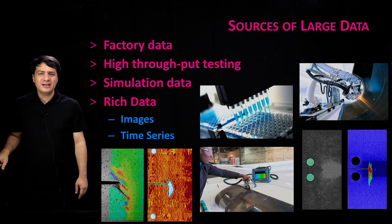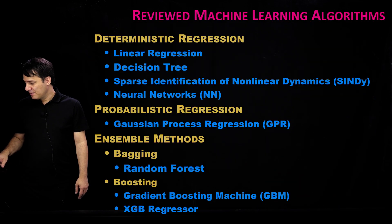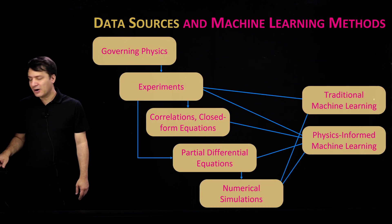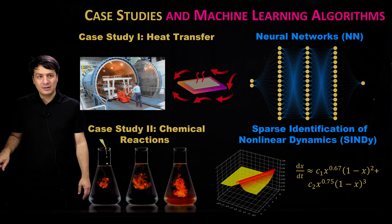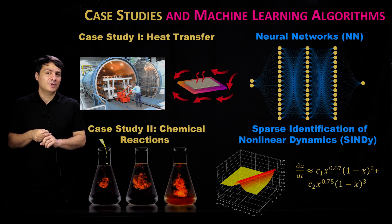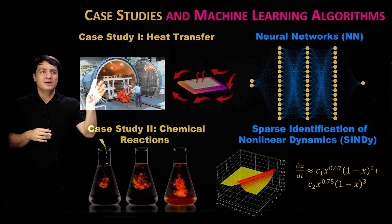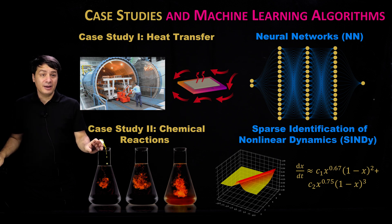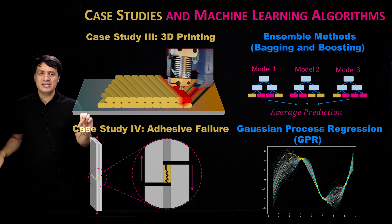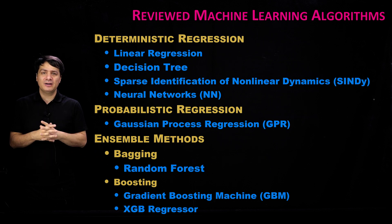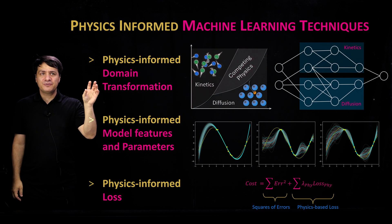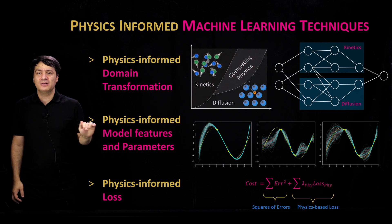Hello. In the last lecture, we went over some basic definitions, including what are traditional machine learning methods and what are physics-informed machine learning methods. The four case studies that we're going to learn in this lecture are a case study on heat transfer, a case study on chemical reactions, a case study on 3D printing, and a case study on adhesive failure. We'll also review some baseline traditional machine learning approaches and some physics-informed machine learning techniques that enhance those traditional approaches to capture the underlying physics much better.